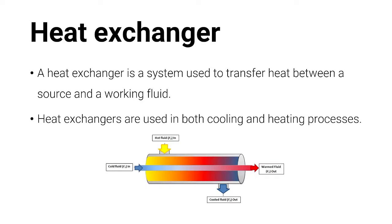So what is a Heat Exchanger? A Heat Exchanger is a device used to transfer or exchange heat between a source and a working fluid. Heat exchangers are used in both cooling and heating processes. As you can see in this figure, the cold fluid is coming from one direction and going out the other, while the hot fluid enters from another direction and exits oppositely. The cold fluid absorbs heat from the hot fluid and gets warmed up, while the hot fluid gets cooled down by rejecting heat to the cold fluid.